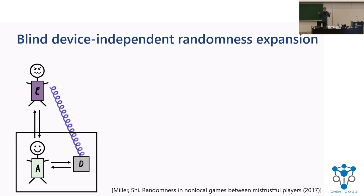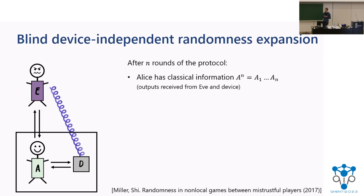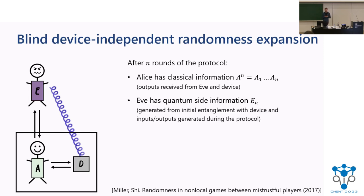For us, it's not really important how this protocol goes in detail. If you're familiar with DIQKD and those kinds of things, you'll correctly guess that they will play some CHSH type game. What we need to know is the high-level structure: after n rounds of this protocol, Alice will have some classical information A1 through An, one from each round. That is just the outputs she receives from Eve and the device. Eve will have some quantum side information En after n rounds, which she can generate in whatever way she wants — using the initial state she shared with the device, the inputs and outputs generated during the protocol, any complicated update map. She can do whatever she wants.